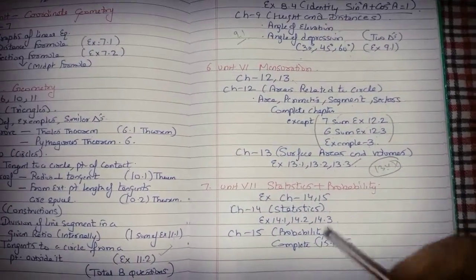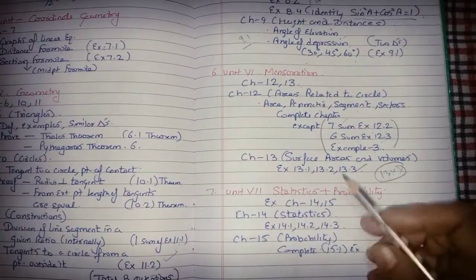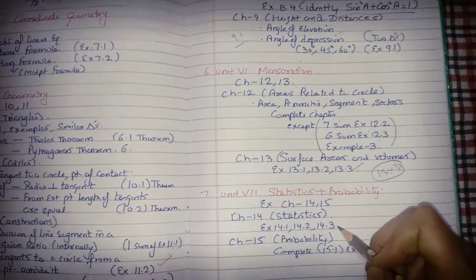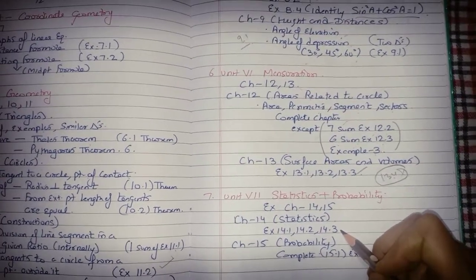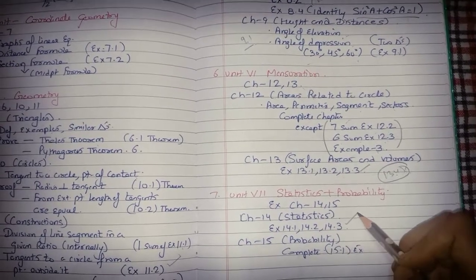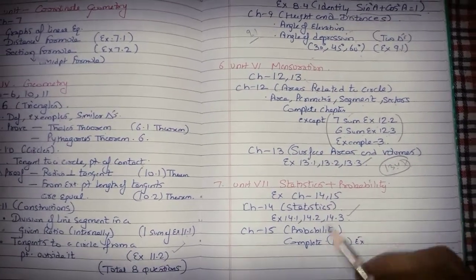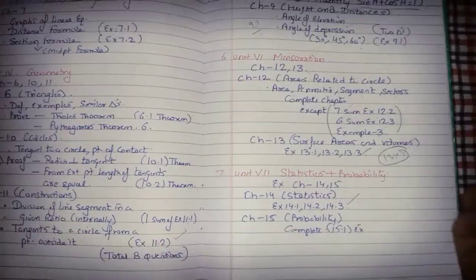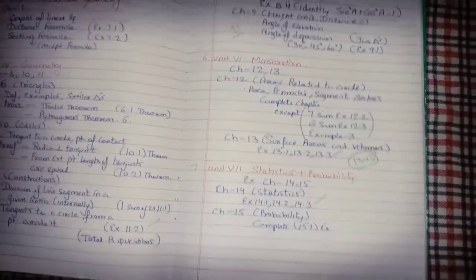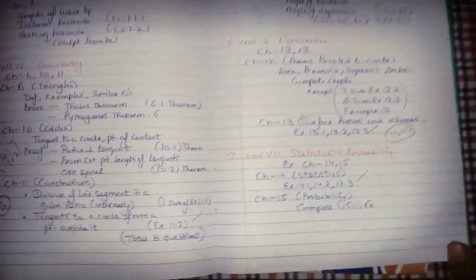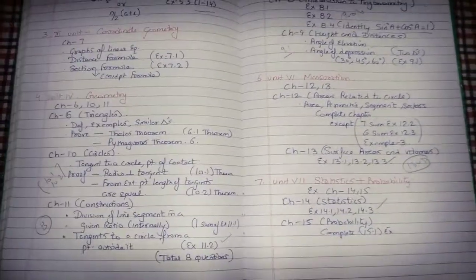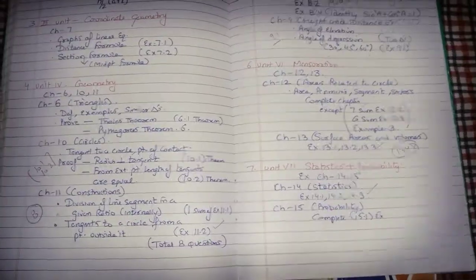The last unit is Statistics and Probability. For Statistics (Chapter 14): prepare exercises 14.1, 14.2, and 14.3 completely; skip exercise 14.4 on cumulative frequency curves (ogive). For Probability (Chapter 15): prepare exercise 15.1 completely - nothing to skip from it.